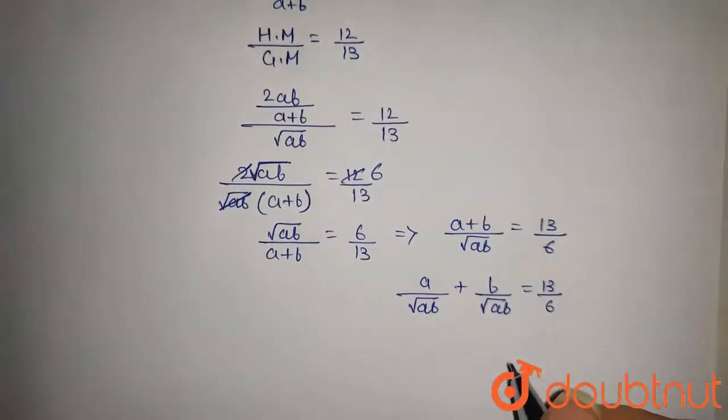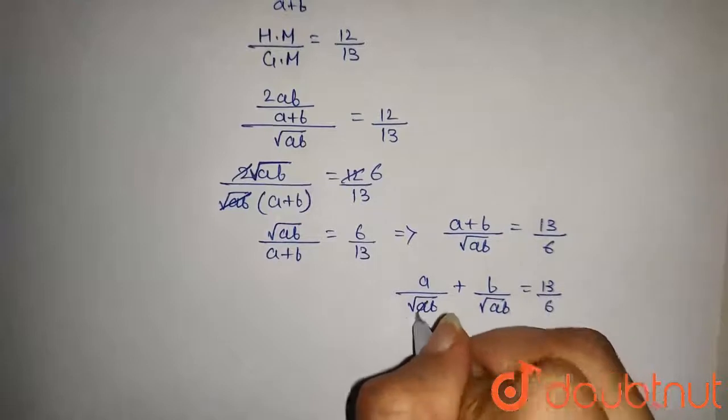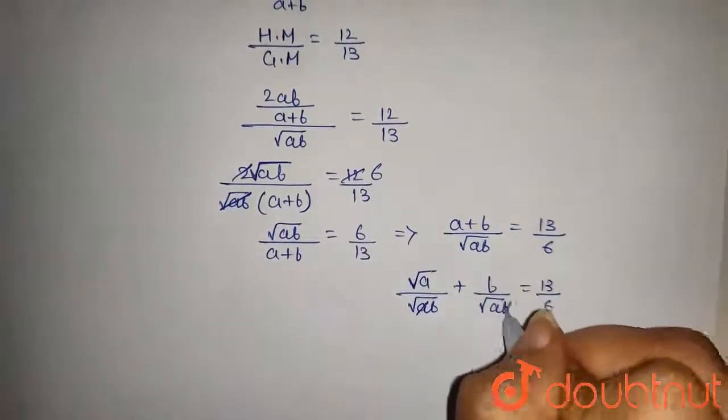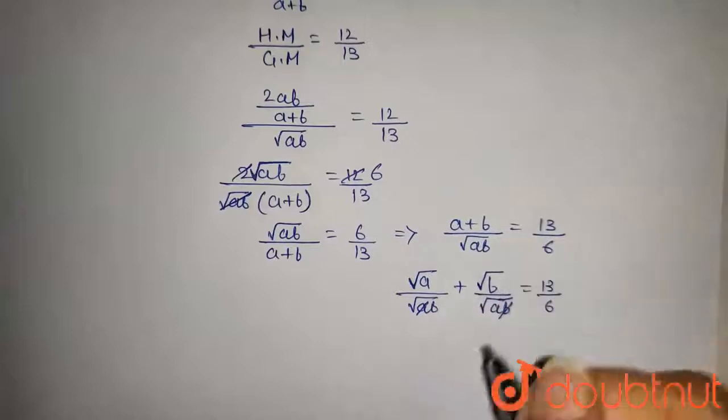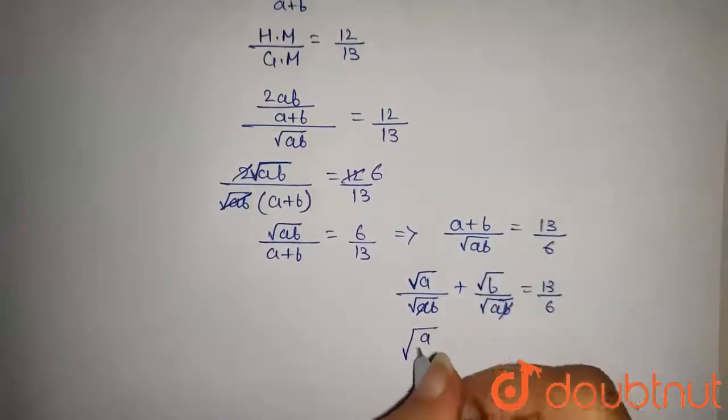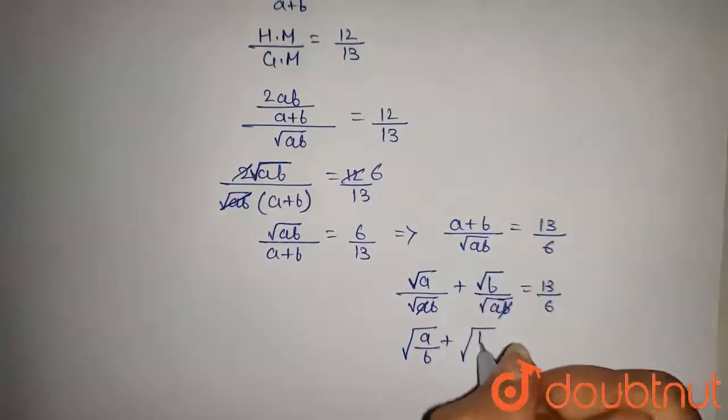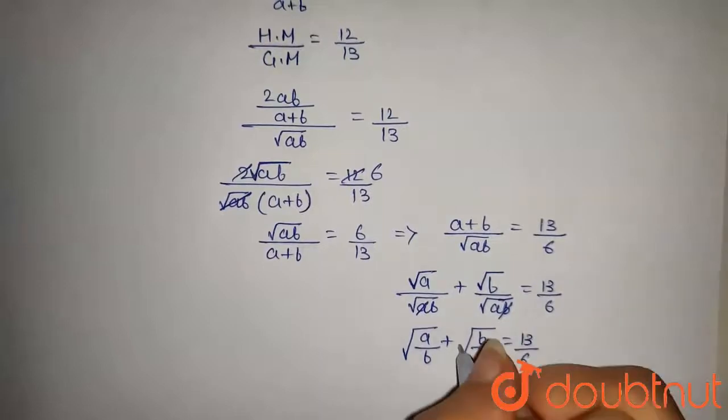This A will be cancelled out and here we will get under root, and this B will be cancelled out and here we get under root. So it will be under root A by B plus under root B by A is equal to 13 by 6.